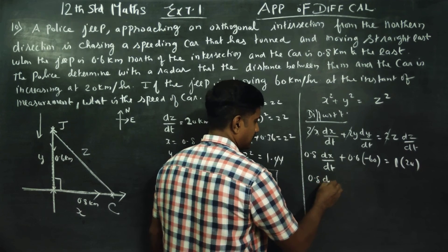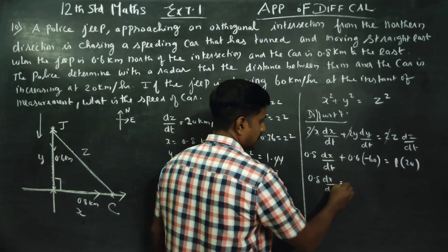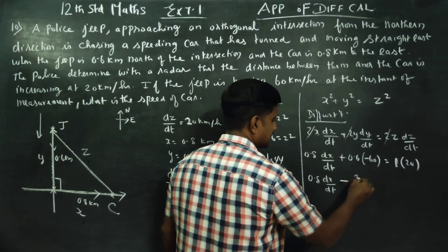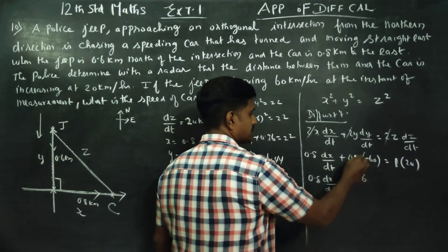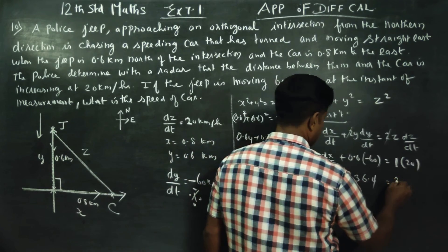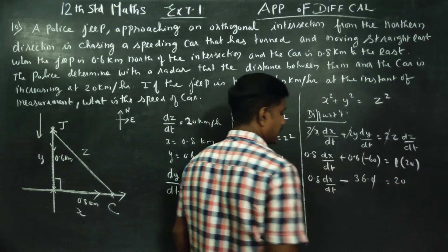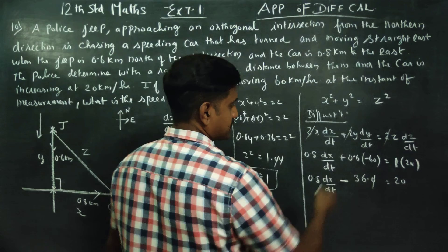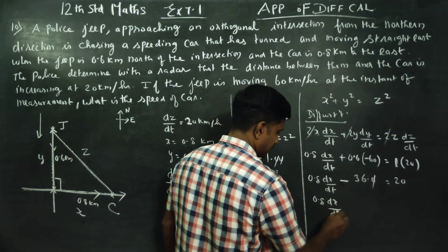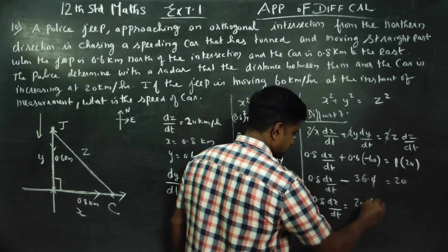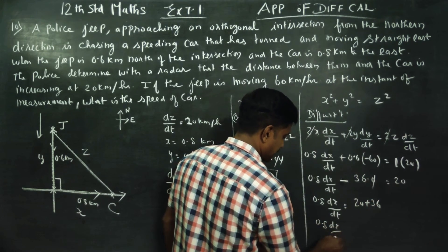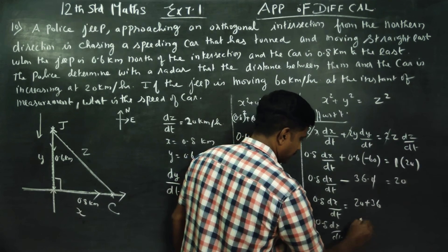When you simplify: 0.8(dx/dt) - 36 = 20. So 0.8(dx/dt) = 20 + 36 = 56.